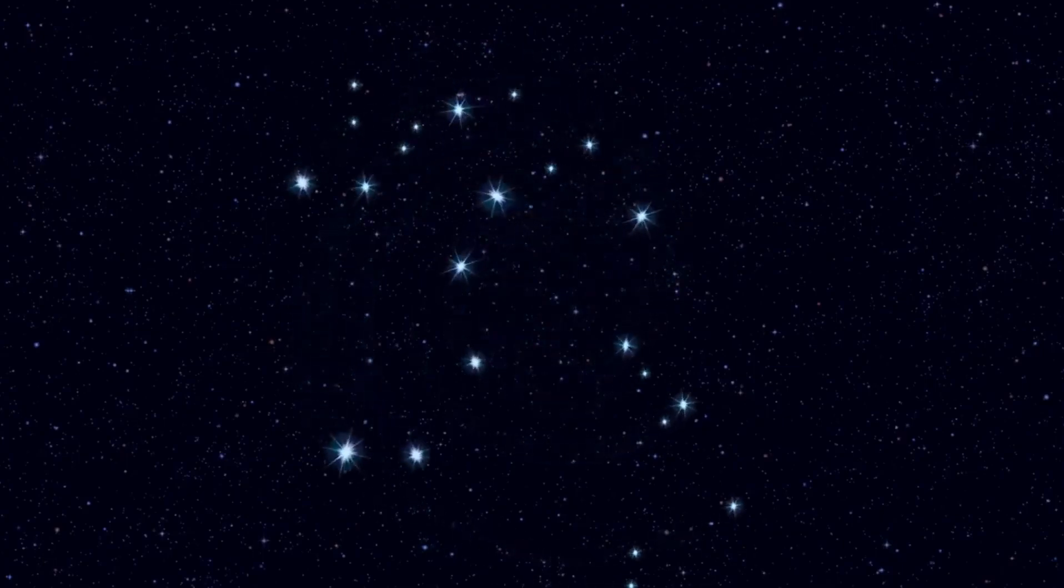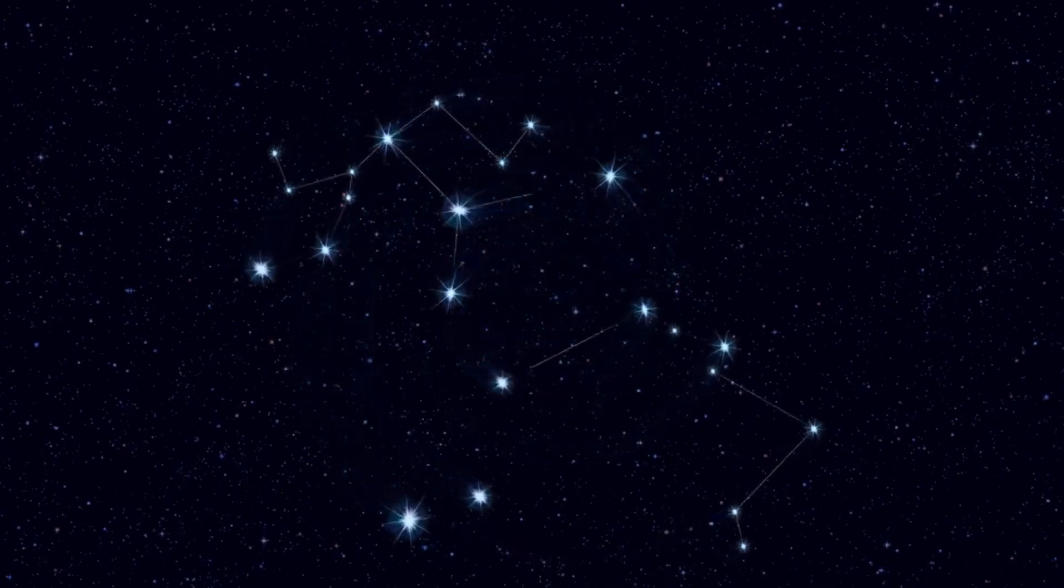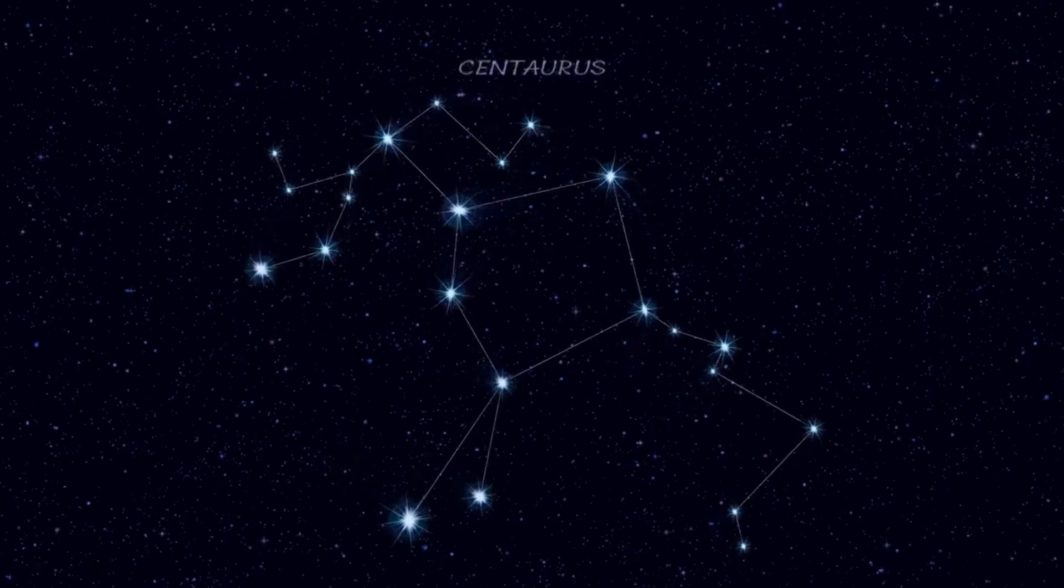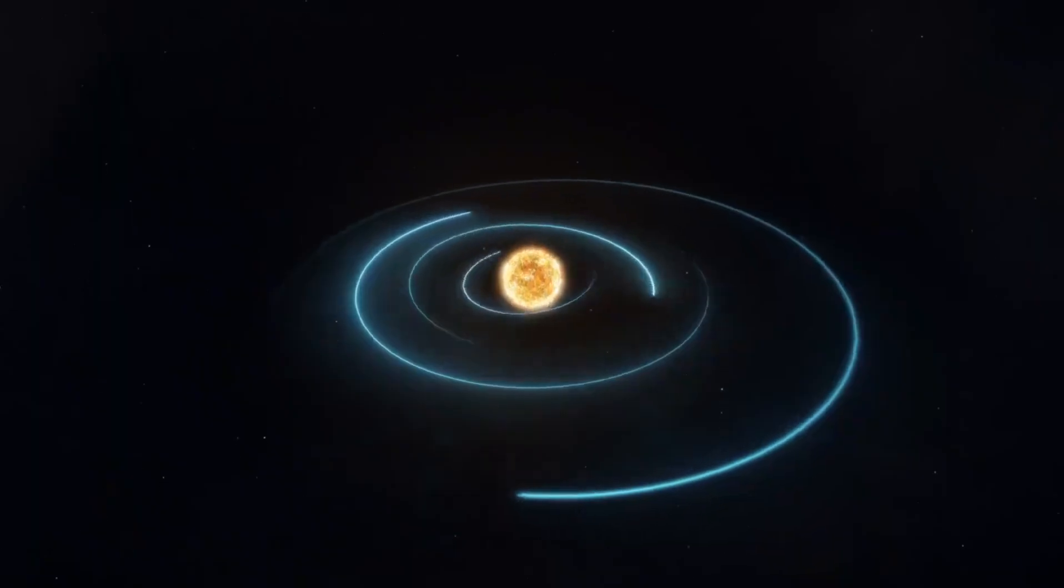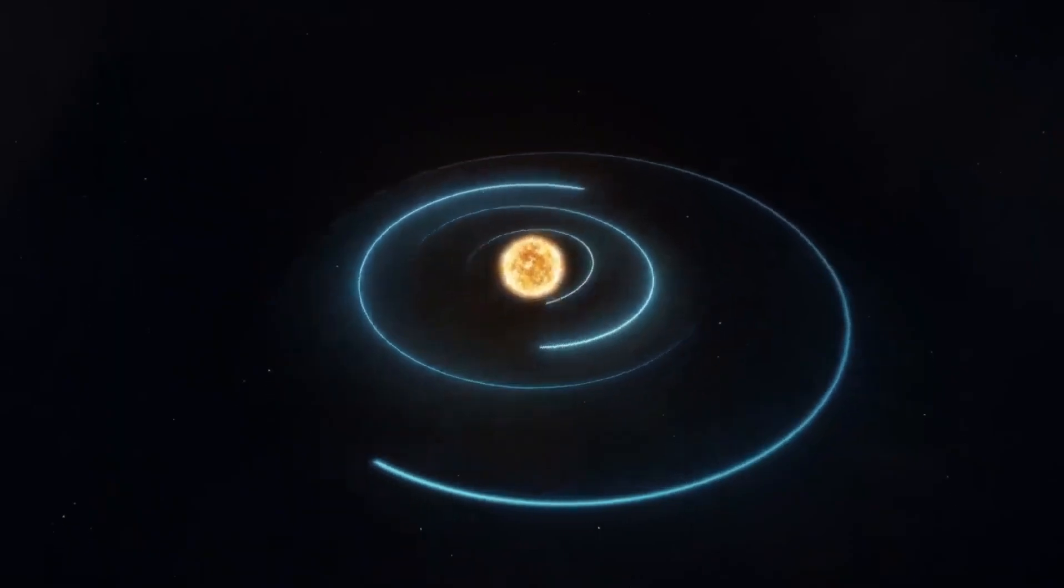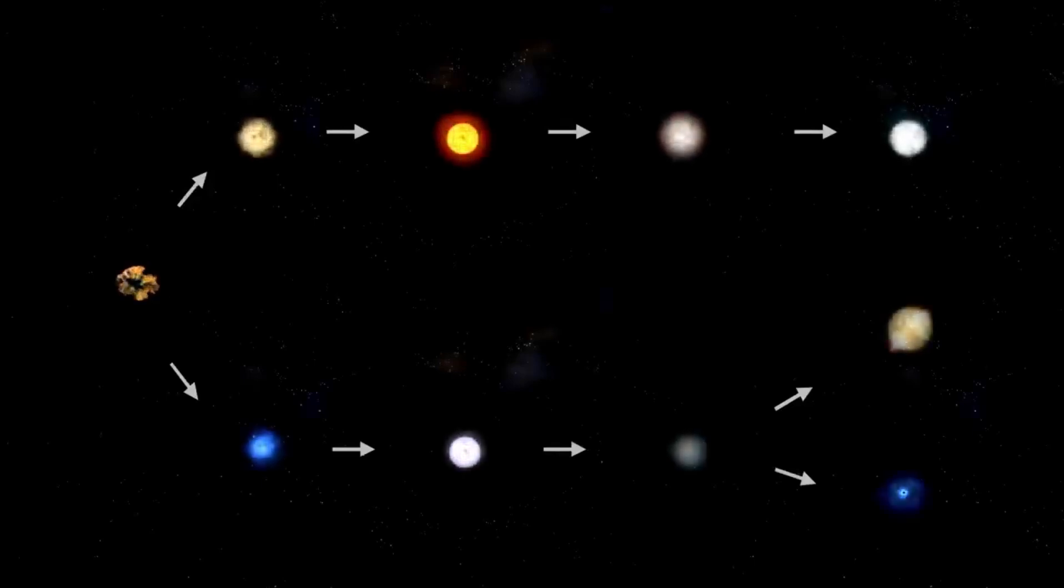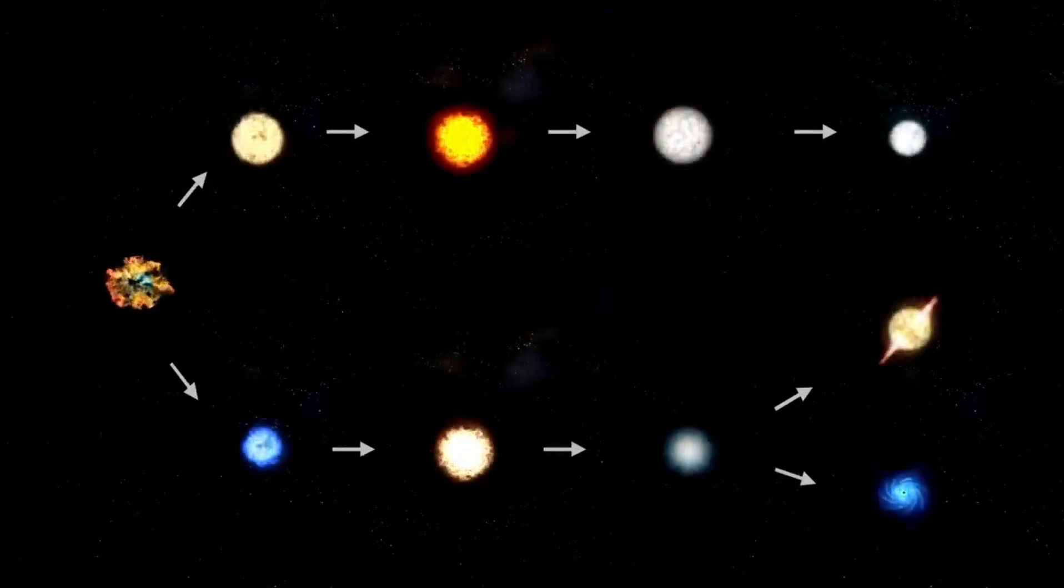Betelgeuse, the red supergiant star located on the shoulder of Orion the Hunter, has long captivated astronomers and stargazers alike. Known for its striking reddish hue and prominent position in one of the most recognizable constellations, Betelgeuse is a star that commands attention. But in recent years, this celestial giant has exhibited peculiar behavior that has sparked excitement and speculation among scientists and amateur astronomers.